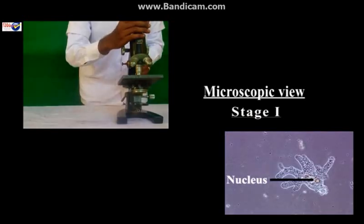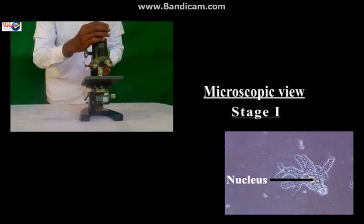Observations: Amoeba is a protozoa that lives in water and has an irregular shape. In the center of amoeba, a dense nucleus is seen.